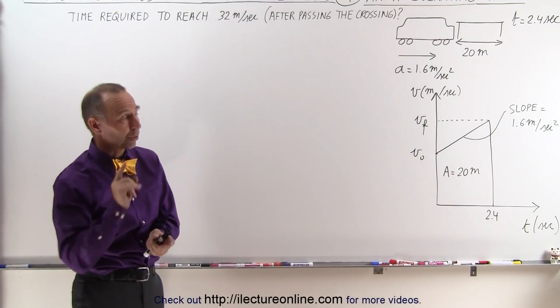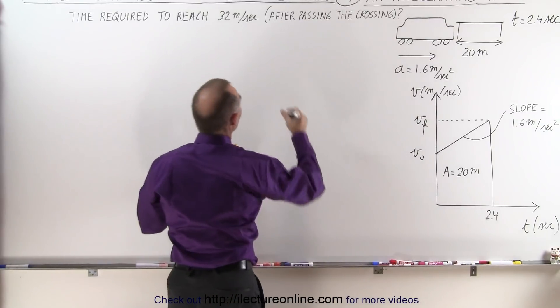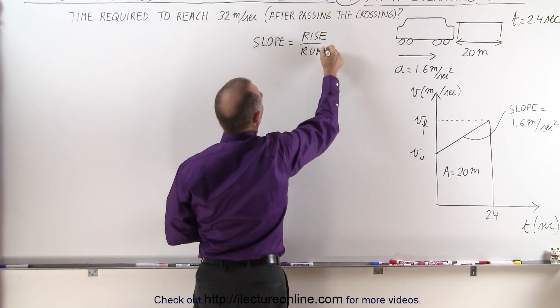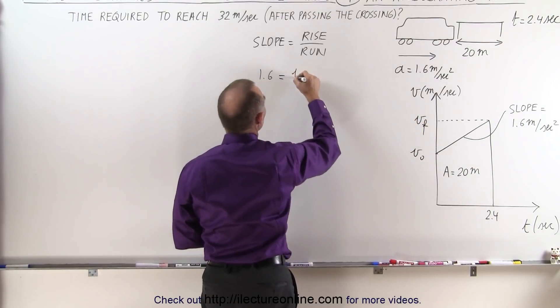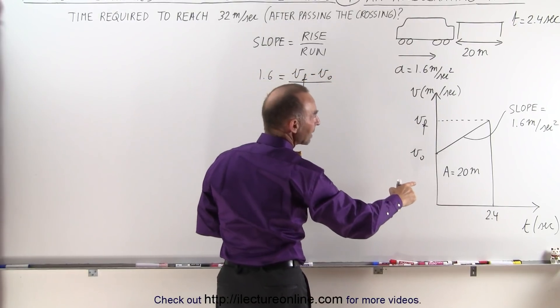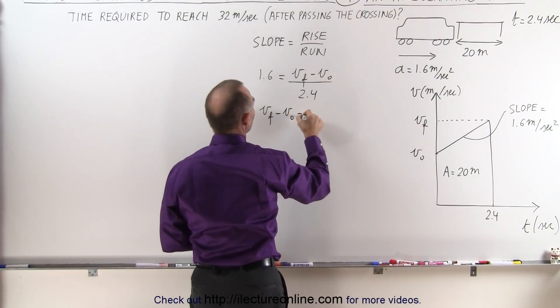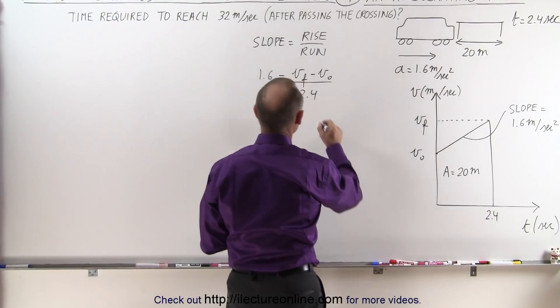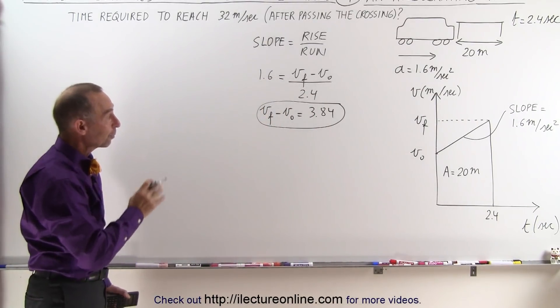So based upon that, we should be able to solve the problem. We have two unknowns, which means we're going to need two equations. The first equation we can use the slope to relate v_final, v_initial, and the slope. By definition, the slope is equal to the rise over the run. In this case, the slope, which is 1.6, equals the rise, which is v_final minus v_initial, divided by the run, which is 2.4. So v_final minus v_initial equals 1.6 times 2.4, which is 3.84. Now we have a relationship between the initial and final velocity. The difference between them is 3.84.